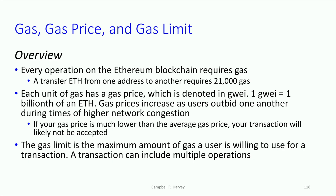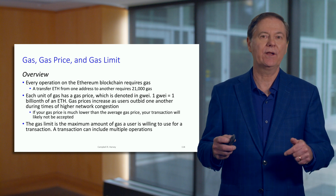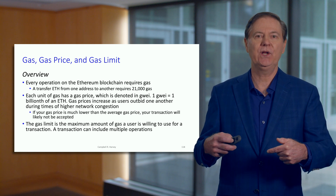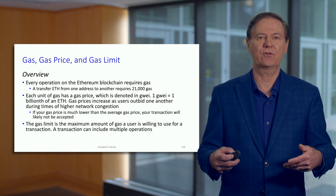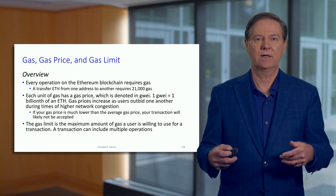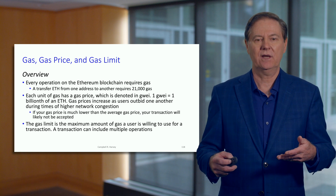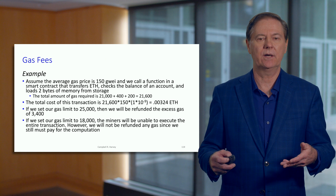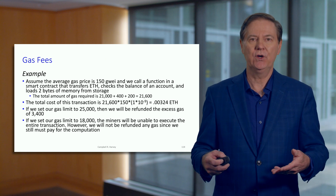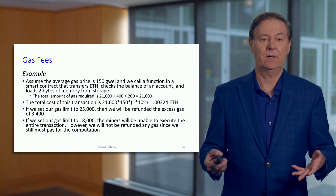Gas is usually measured in a unit called a gigawei. Wei is the smallest unit in Ethereum, and a gigawei is a billionth of one ether. The price of gas is determined by effectively an auction. You can figure out how much gas is needed based on the computing steps required, but the price of gas can vary depending on network congestion. If a lot of people are using the network, the price of gas goes up and it could become very expensive.